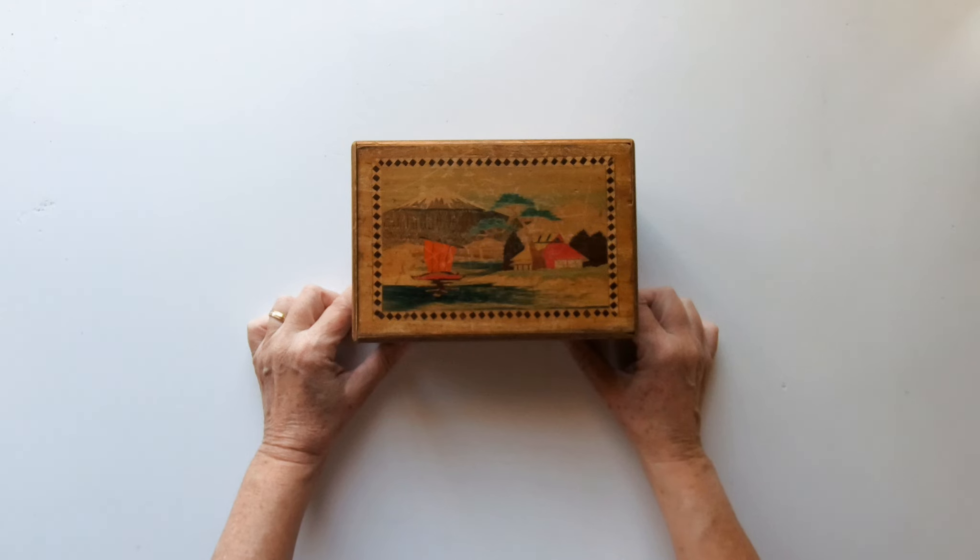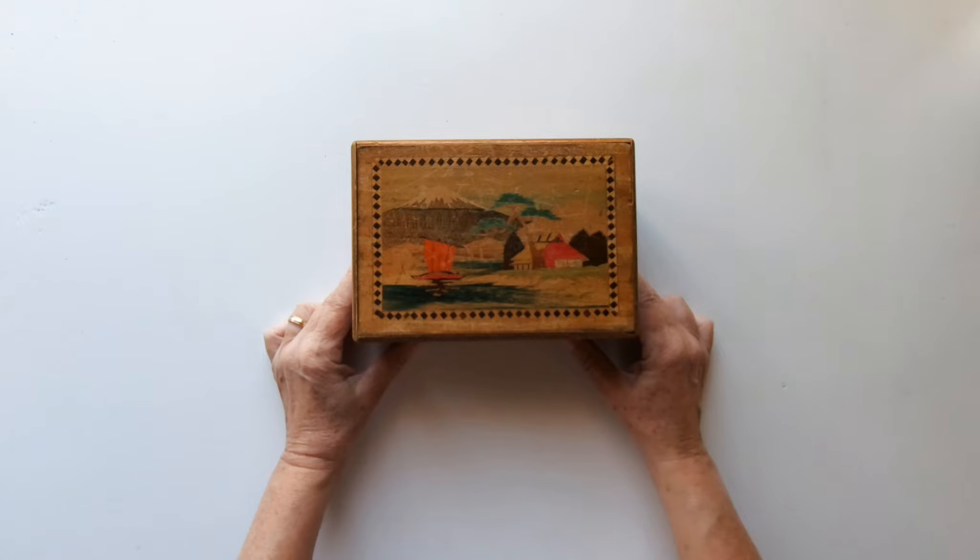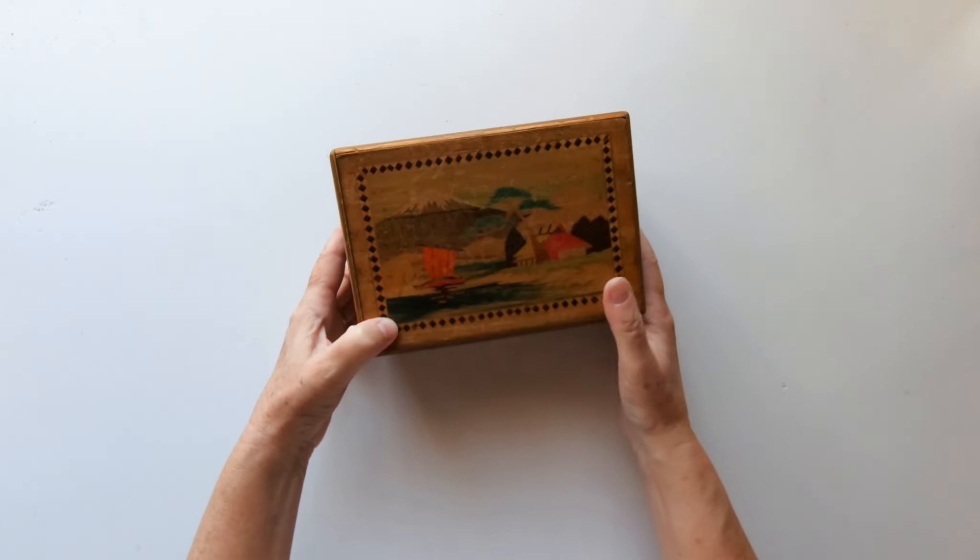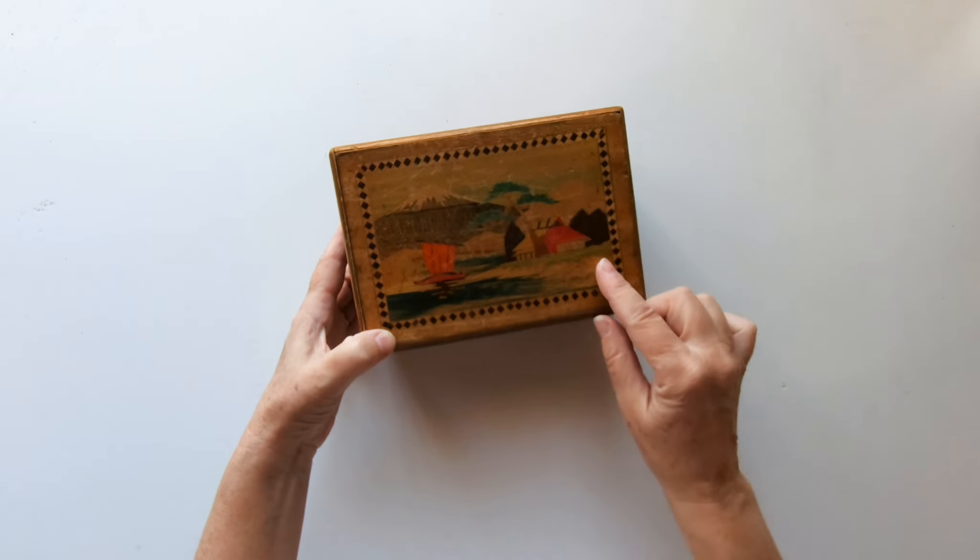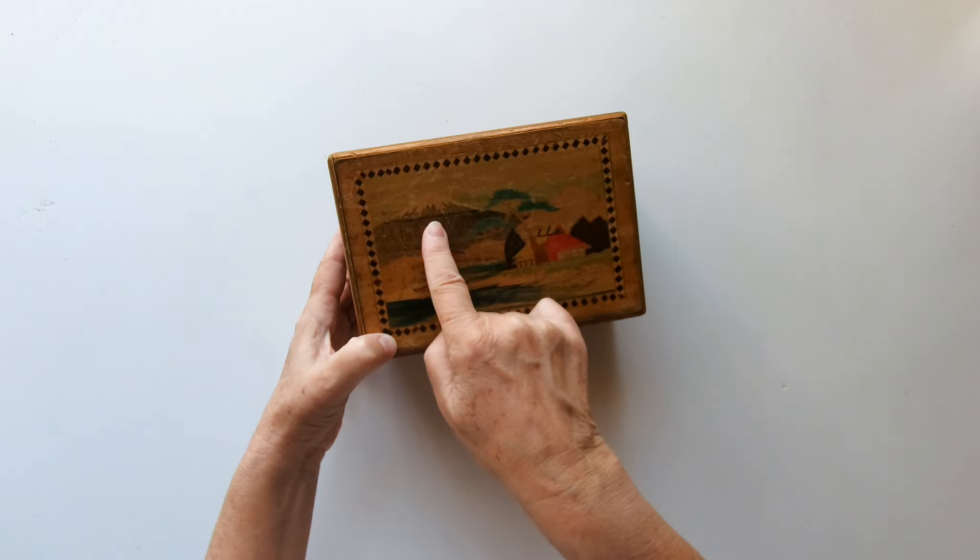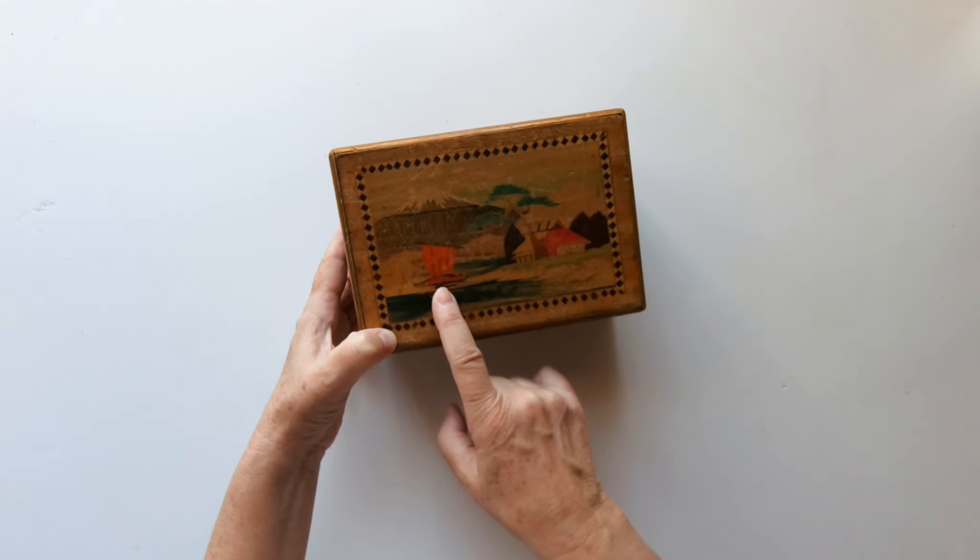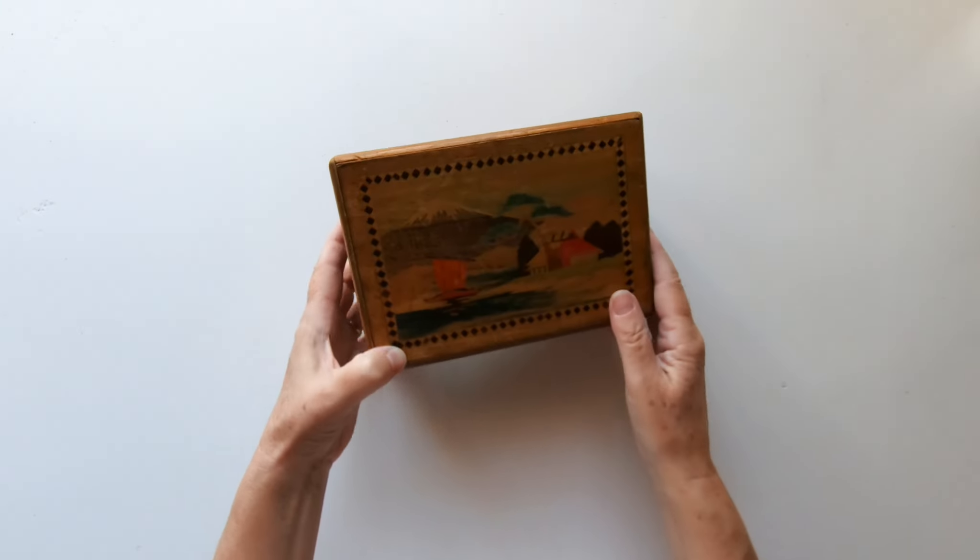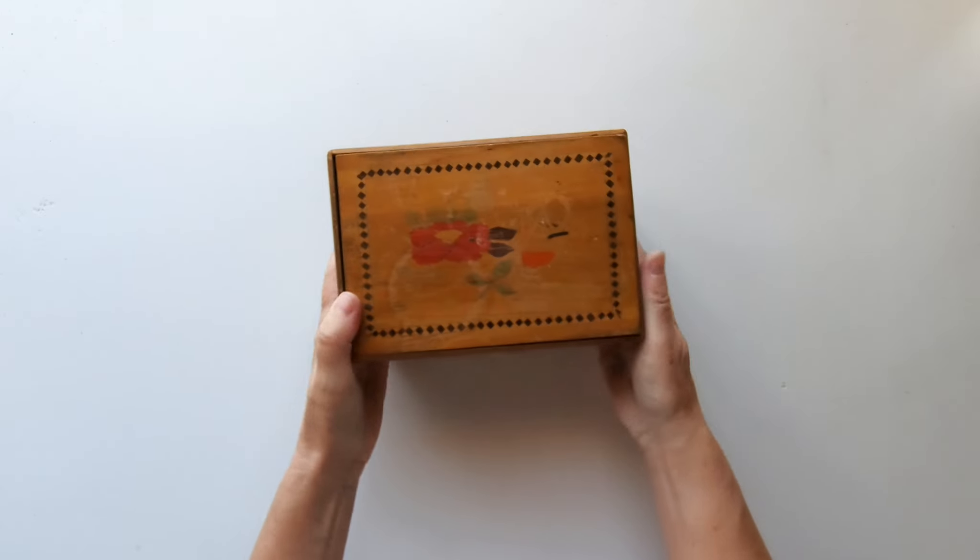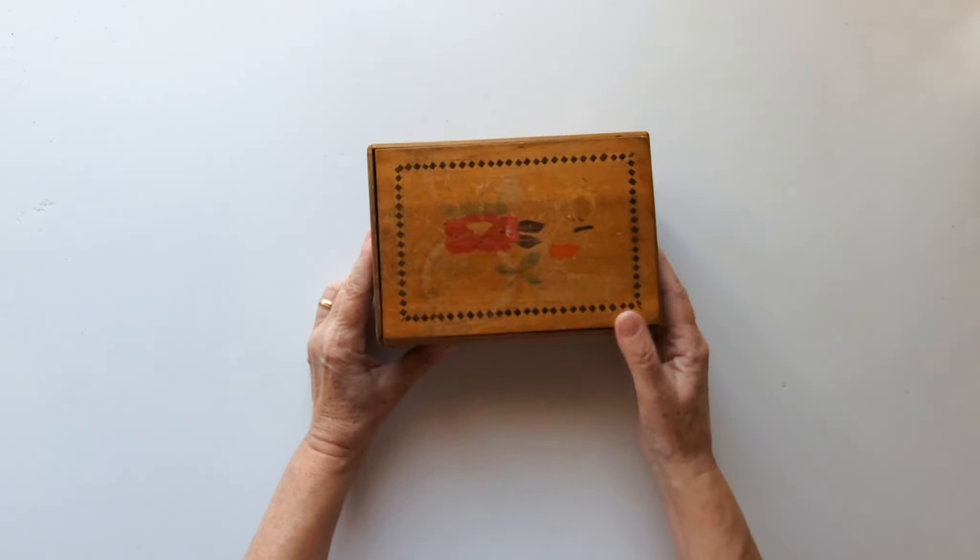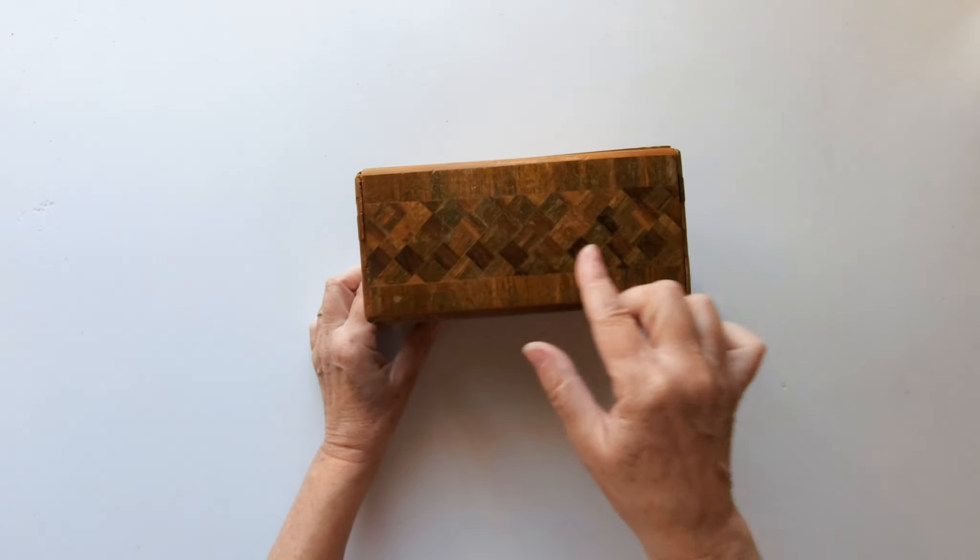Today I'm going to try to open this very old Japanese puzzle box from the late 50s, early 60s. The decorative painting is really faded. We have Mount Fuji, a tree, a sailing boat, some homes. On this side there's a flower, and we have that pattern going around.